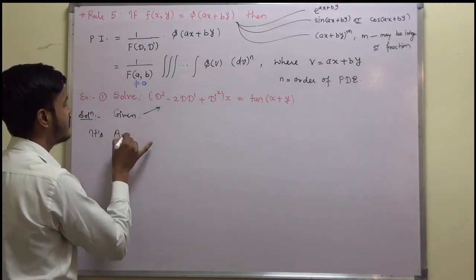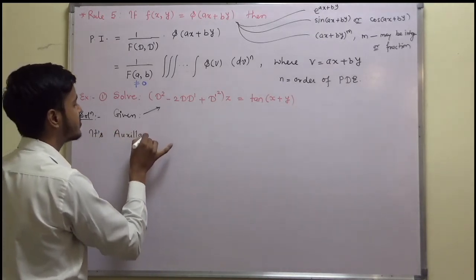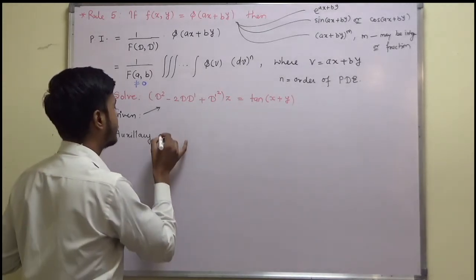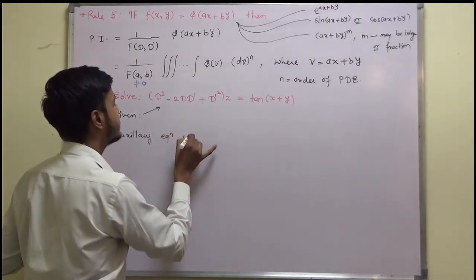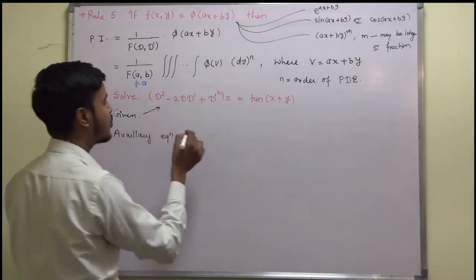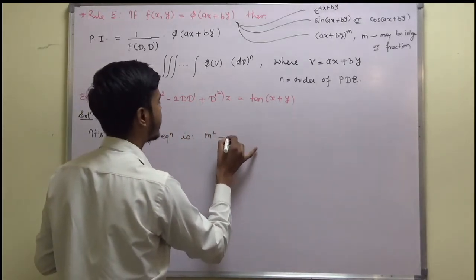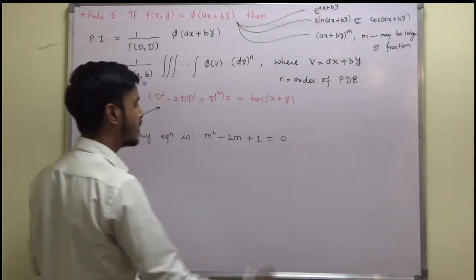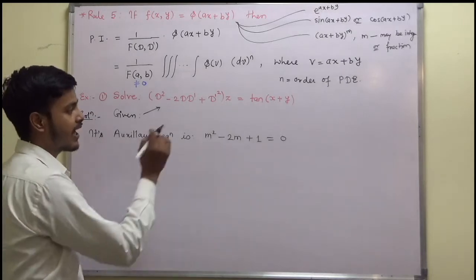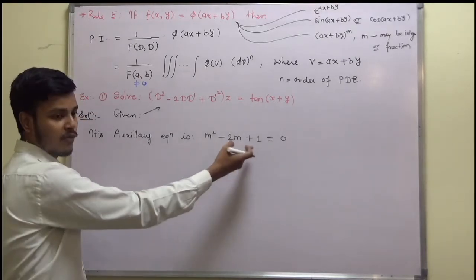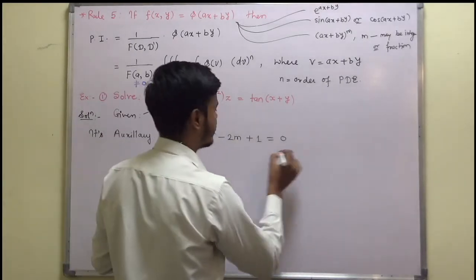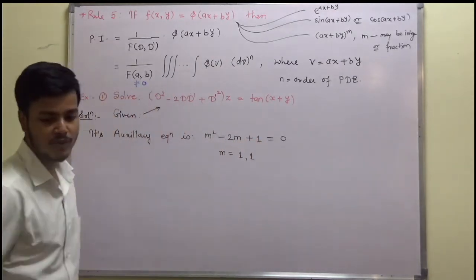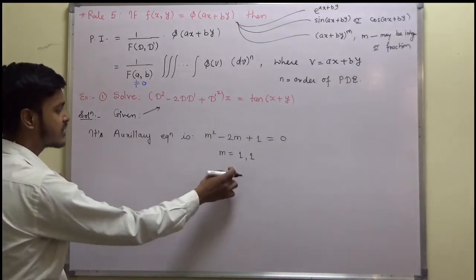You can write its auxiliary equation. The auxiliary equation is found by putting D equal to m and D' equal to 1. This gives m squared minus 2m plus 1 equal to 0. The roots are m equal to 1, 1 — this is (m minus 1) whole squared, so the roots are repeated.